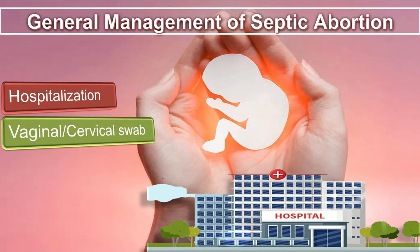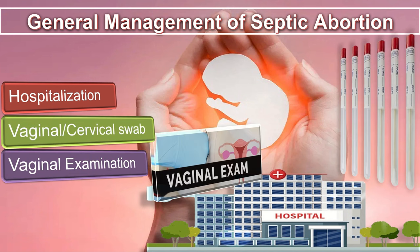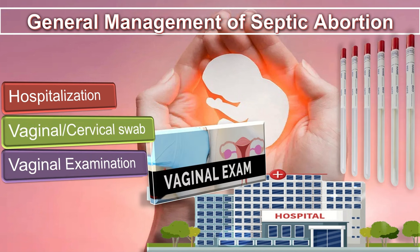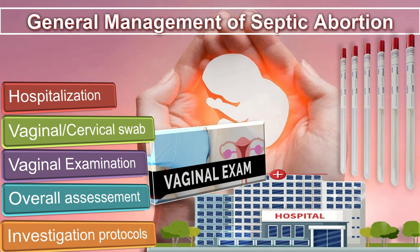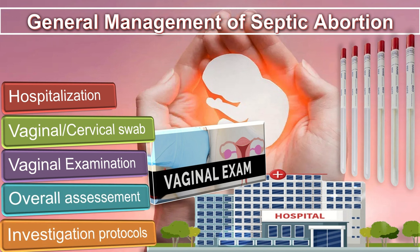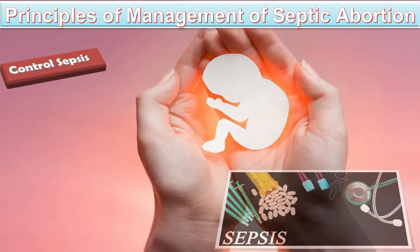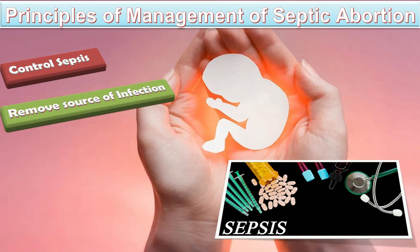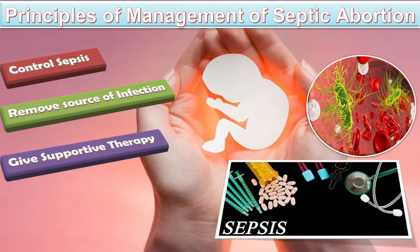General management of septic abortion includes hospitalization, taking vaginal or cervical swabs, appropriate vaginal examination, and sending investigations according to hospital protocol. The principles of management are: to control sepsis, to remove the source of infection, to give supportive therapy to restore normal hemostasis and cellular metabolism, and to monitor response to treatment.